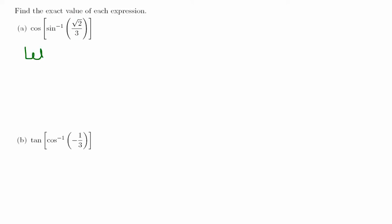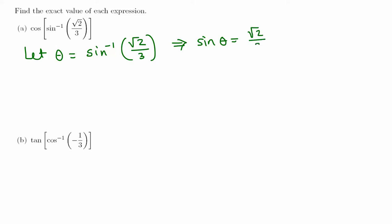Let theta equal sine inverse of root 2 over 3. This means sine of theta equals root 2 over 3. The range of sine inverse means theta is between negative pi over 2 and pi over 2. Since sine is positive, theta is in the first quadrant, from 0 to pi over 2.